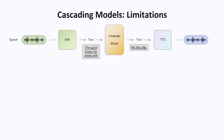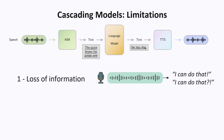First of all, what is the problem with cascading models? There are three main problems. The first problem is loss of information when going from speech to text. A lot of useful information about tone and emotion is lost when going from speech to text. That's why we normally do important conversations in person or at least with a phone call and not with text.